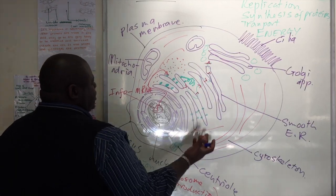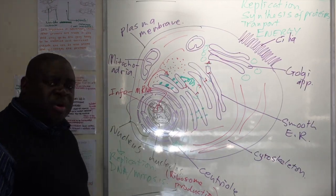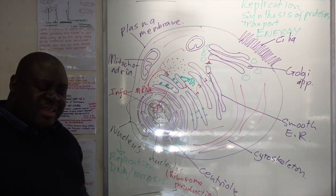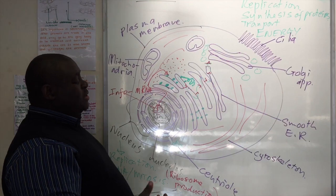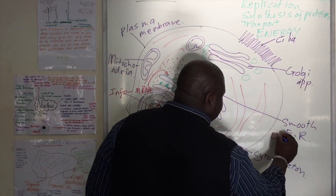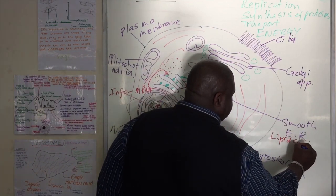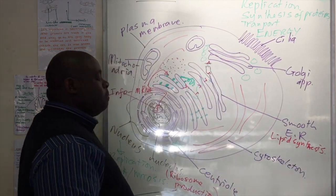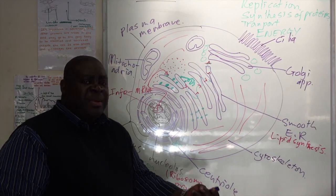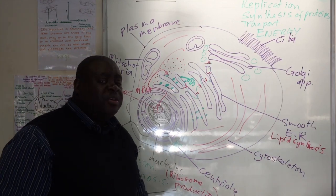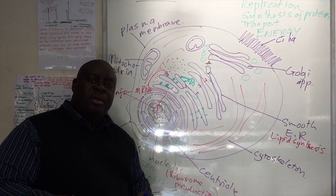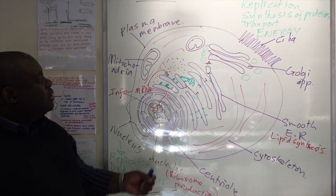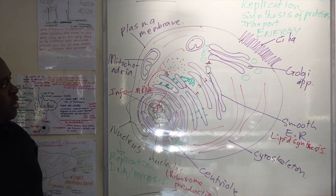Now, the smooth ER has no ribosomes. What is its job? The smooth ER is also involved in synthesis — synthesis of lipids. Lipid synthesis: the lipids synthesized would be things like phospholipids, cholesterol, anything like that which the cell needs that is lipid-based would be synthesized by the smooth ER.